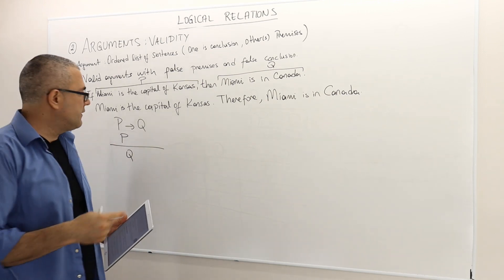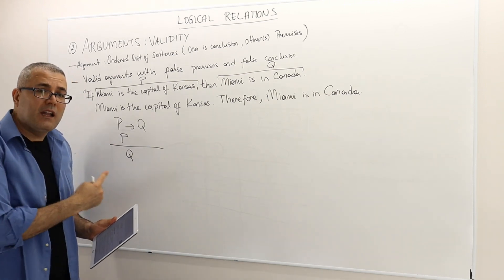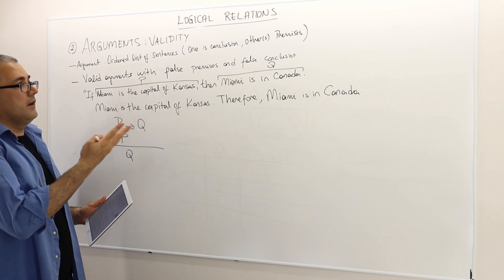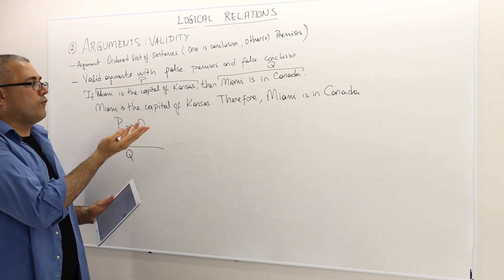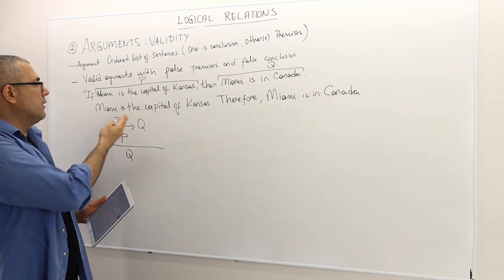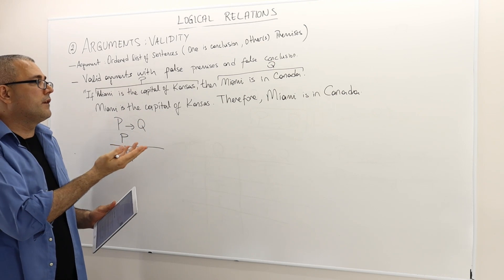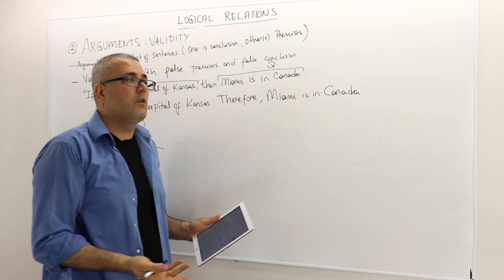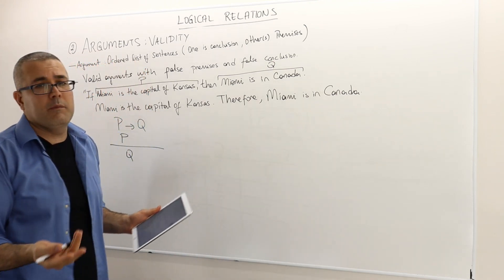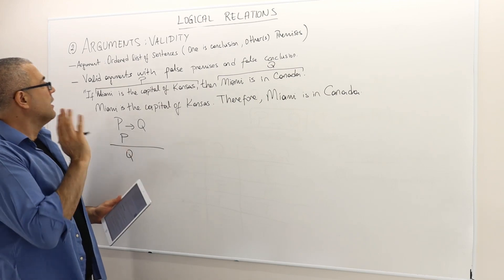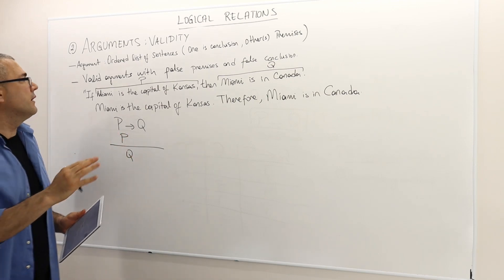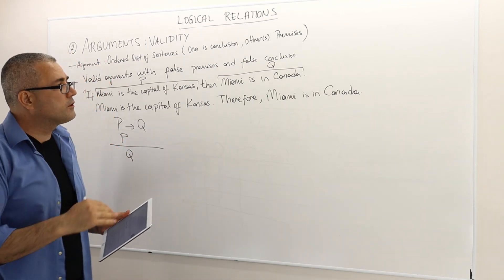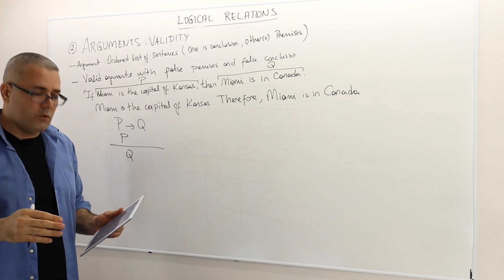Later we will show that this is a valid argument. But at least one of the premises is false — Miami is not the capital of Kansas. And the conclusion is also false — Miami is not in Canada. So the point is there are valid arguments with false premises and a false conclusion.